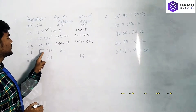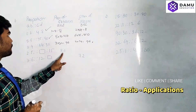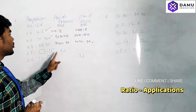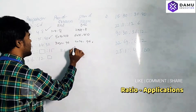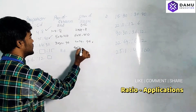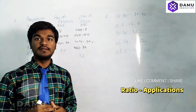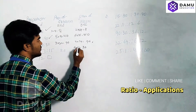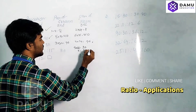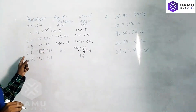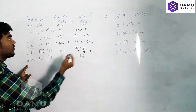Next, 2 is to 5 as something is to 15 — we don't know one mean value. Product of extremes is 2 × 15 = 30. Product of means must also equal 30, so 5 × x = 30. Therefore x = 30 ÷ 5 = 6. So the missing value is 6.